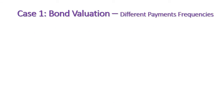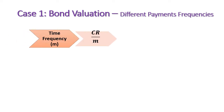Now let me introduce the first case: finding bond value at a time frequency higher than annual. Given a higher time frequency, m refers to the number of time intervals per year. We have to adjust three components: the coupon or interest rate divided by m, the required rate of return divided by m, and the number of periods multiplied by m.